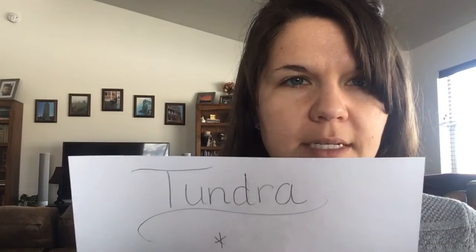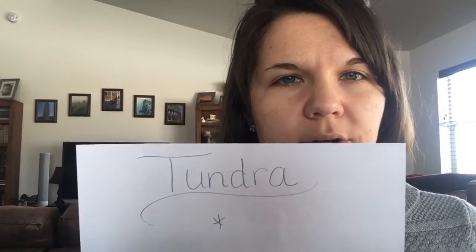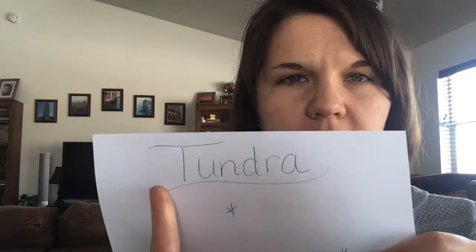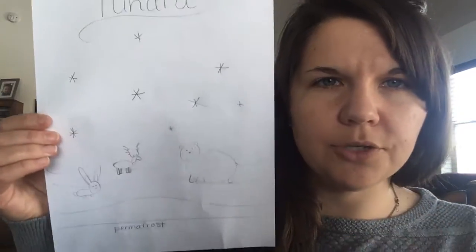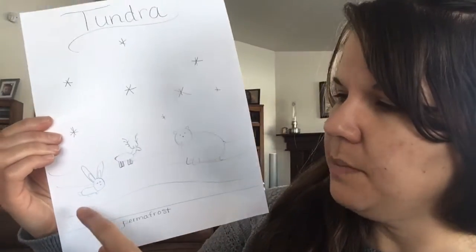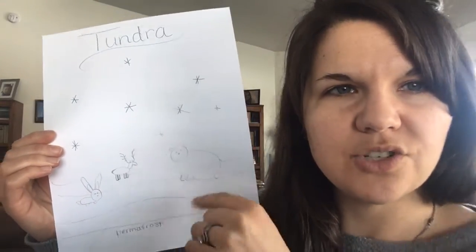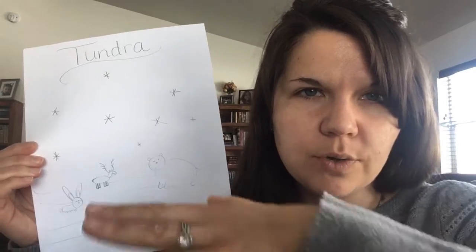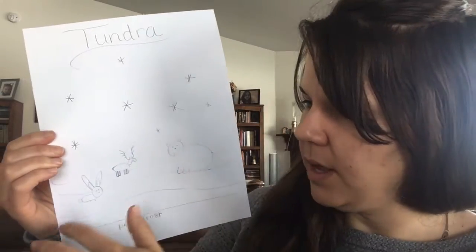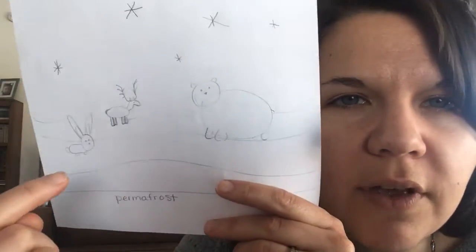I wrote 'tundra' nice and fancy at the top — you could do cursive letters, bubble letters, or decorated letters. It needs to say tundra. Then I made some wavy lines, not to show water but to show the different layers of liquid sitting on top of the tundra or snow, so you've got these layers of snow and liquid.